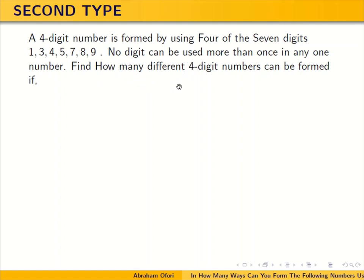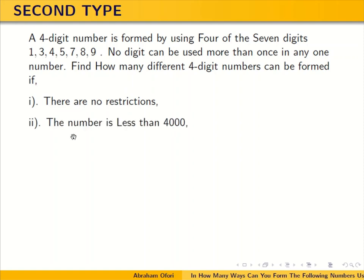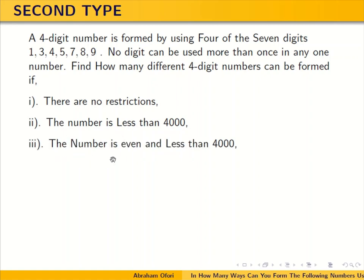We need to find how many different 4-digit numbers can be formed. The first condition is there are no restrictions. The second condition says the number is even and also less than 4,000. So, think about this and then we continue.